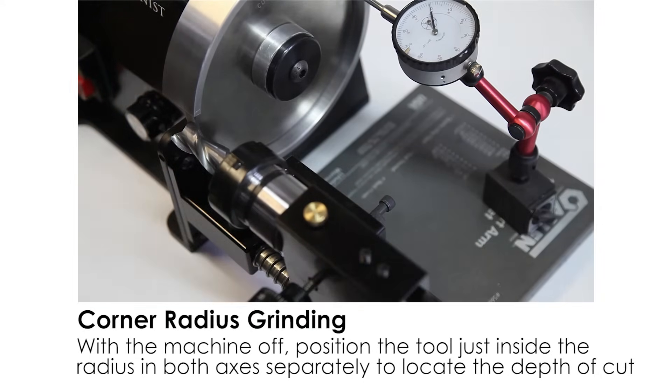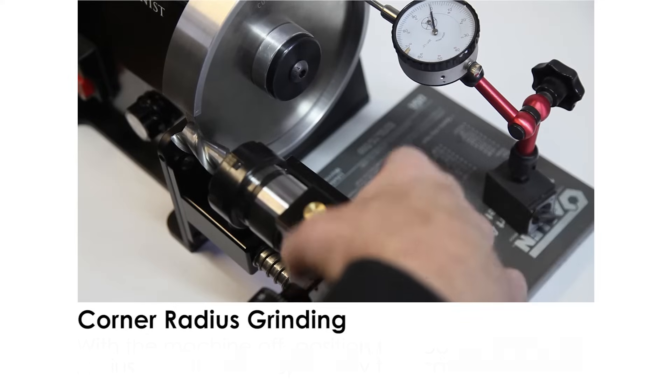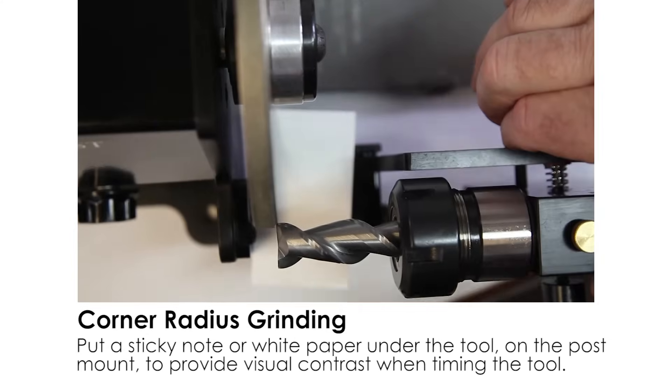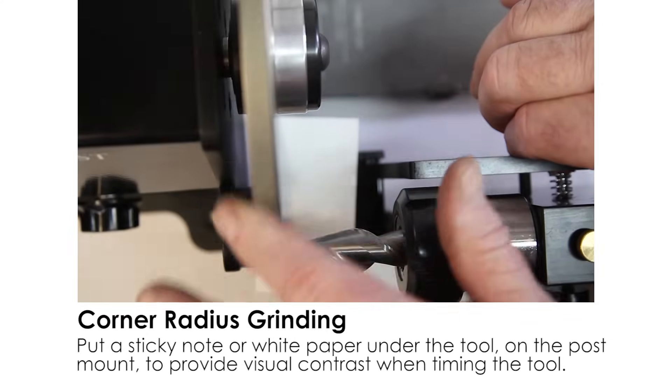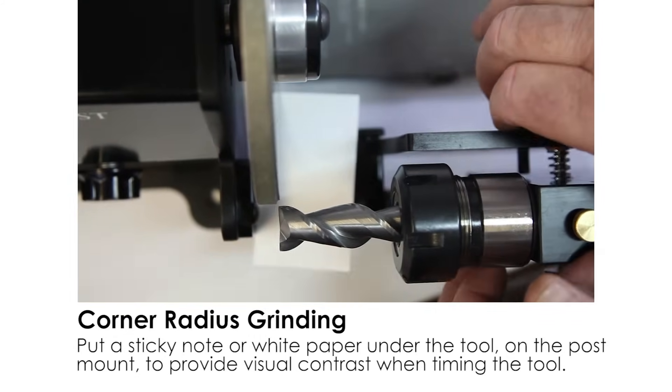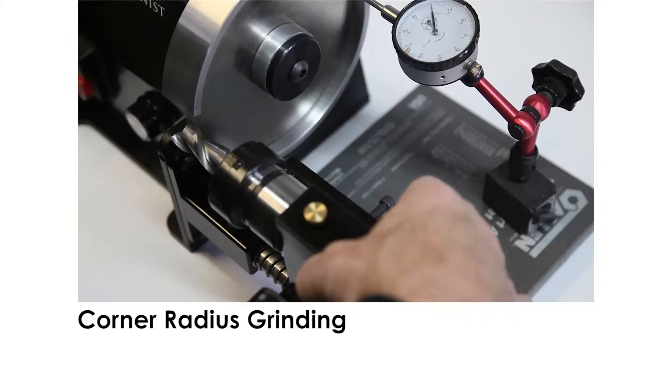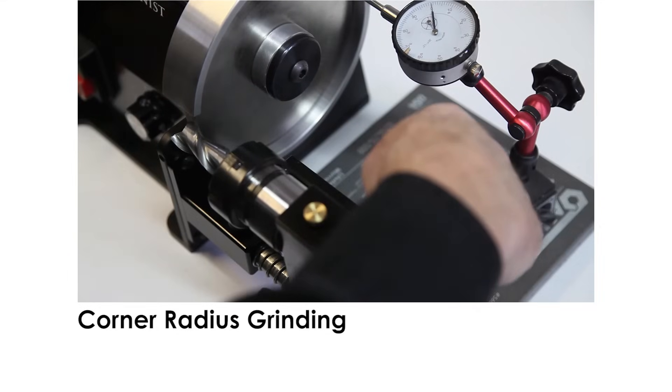To locate the tool in the Y axis there's a backstop here. You bring the tool just inside the radius on the wheel and then rotate the wheel to make sure it's not quite touching and then set this feed screw, this feed stop.